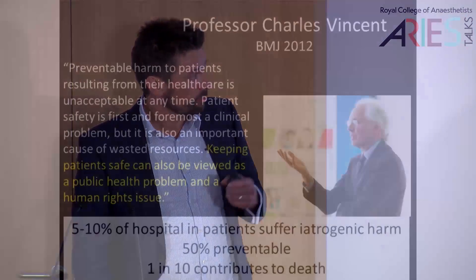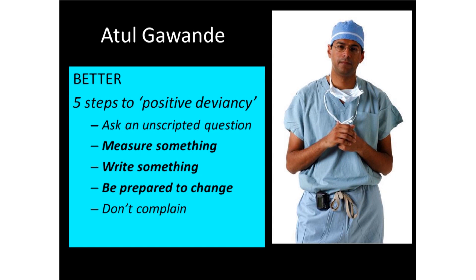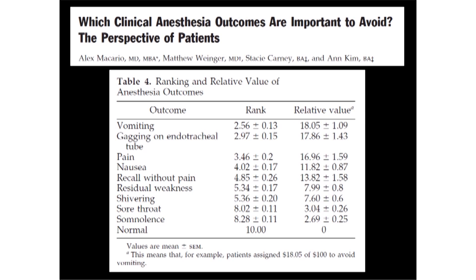There's a reason why I show photographs of people. Charles Vincent, the doyen of quality improvement, talks about keeping patients safe as being both a public health issue and a human right. The statistics suggest that one in ten inpatients suffer iatrogenic harm and a significant proportion contribute to death. Atul Gawande, another doyen of quality improvement, has in his excellent book 'Better' what I call five steps to positive deviancy — I highlight three: measuring something, writing something, and being prepared to change. These are at the heart of quality improvement and are what the NAPs involve.